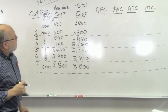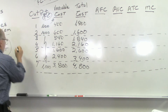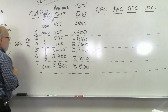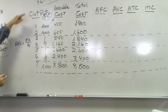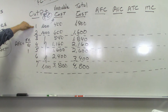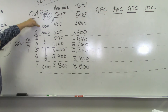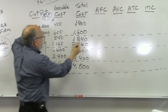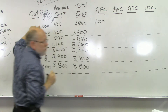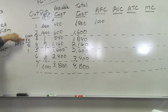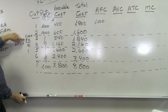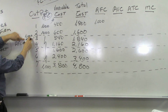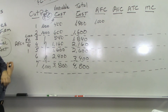Average fixed cost equals fixed cost divided by quantity. At a quantity of 1, that's $1,000 divided by 1, so our average fixed cost is $1,000. Then at a quantity of 2, we have $1,000 divided by 2, which gives us $500.